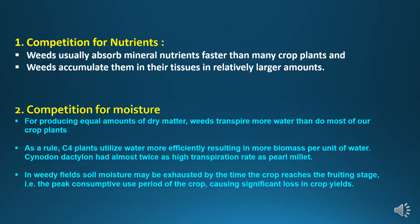Now we will go through the aspects of direct competition. First is competition for nutrients. Weeds usually absorb mineral nutrients faster than many crop plants because of their deep root system, their capacity to absorb nutrients from soil, and their wide adaptability to adverse conditions. Weeds accumulate all those absorbed nutrients in their tissues in relatively larger amounts compared to crop plants. So timely control of weeds is compulsory needed to get the desired yields.